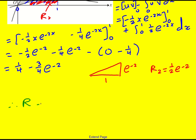And therefore the area r is going to be a quarter minus 3 over 4 e to the minus 2 minus a half e to the minus 2. This is actually 2 over 4. So I'm going to get a quarter minus 5 over 4 e to the minus 2.